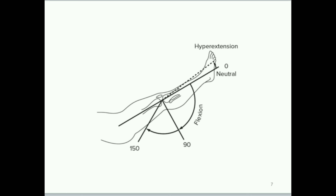In everyday life, pretty much we're only used to flexing and extending our knee. But it turns out there are actually two other motions that the knee does — not to a very large extent, and you really don't want to exercise these movements, because you might actually injure yourself. It turns out that the knee joint is actually a condyloid joint.